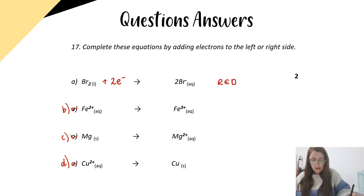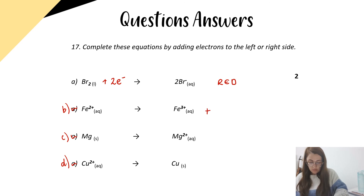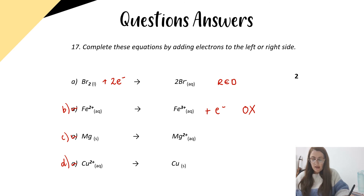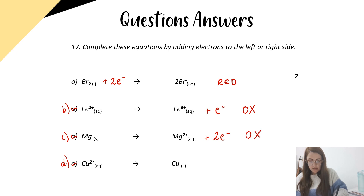For B, iron two plus going to iron three plus — it must have lost an electron to get to three plus, becoming more positive. So my electron goes on the right-hand side, and that's oxidation. For C, magnesium going to magnesium two plus — that is again oxidation. We're losing two electrons to become more positive, specifically two electrons.